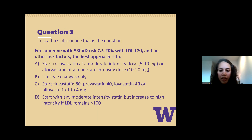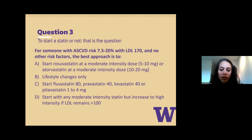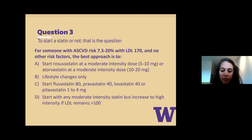Looking at the lower right-hand graph: in people who are not prediabetic, even pushing from atorvastatin 10 to atorvastatin 80 didn't really increase incident diabetes. But if they had prediabetes, there's a clinically and statistically significant difference — a hazard ratio of 1.2 in prediabetics versus 1.08 in those without prediabetes. Next poll: for a patient with intermediate ASCVD risk of about 10%, one risk factor, LDL 170, no other risk factors — what approach would you take?